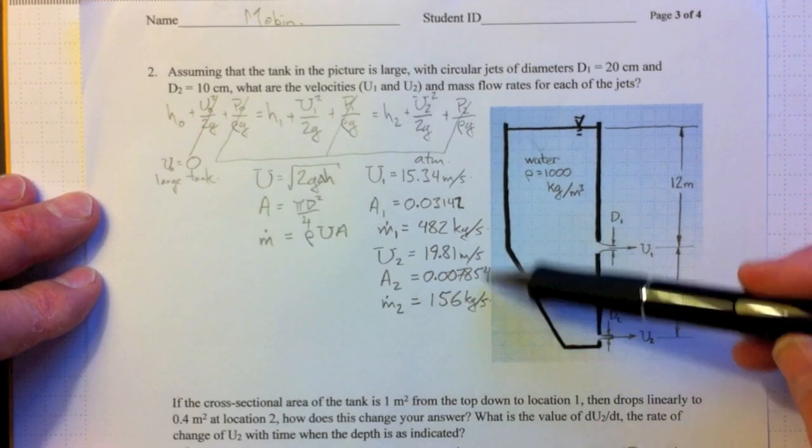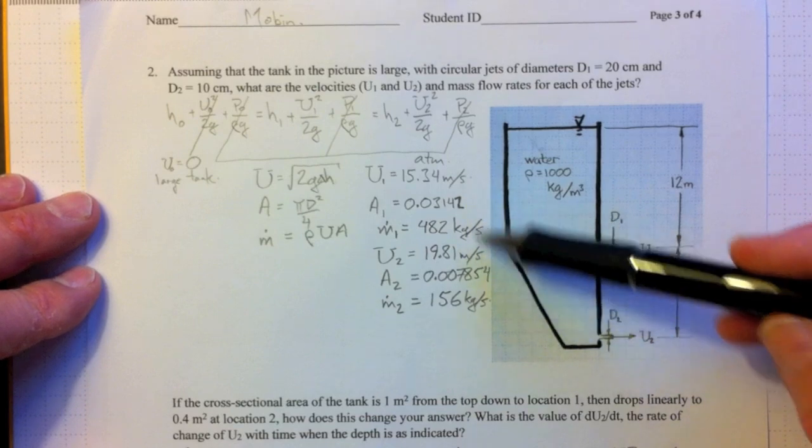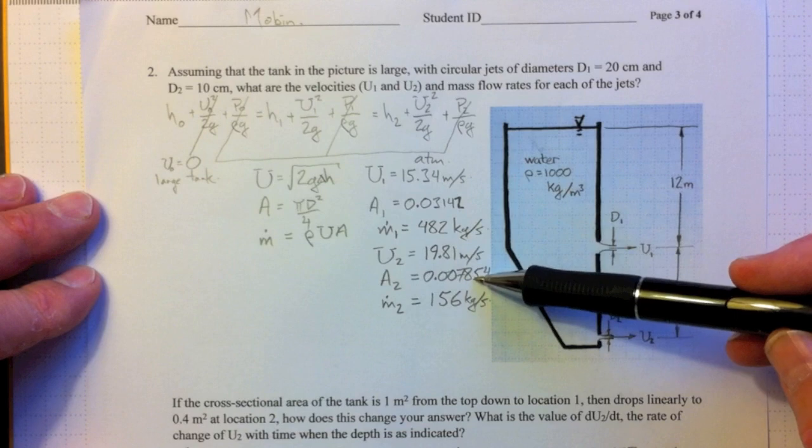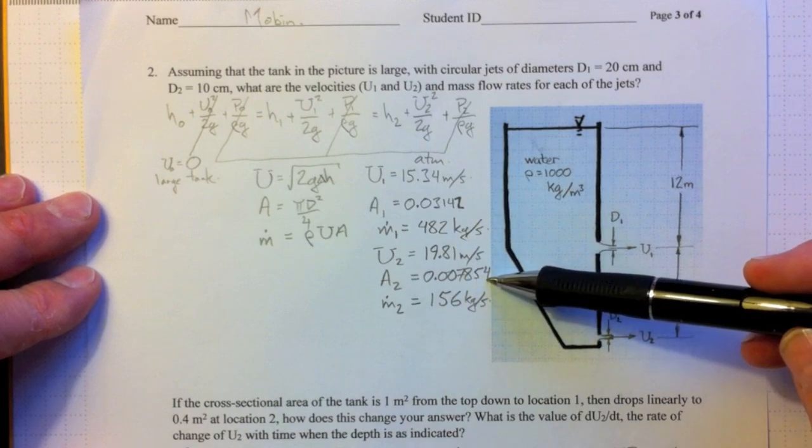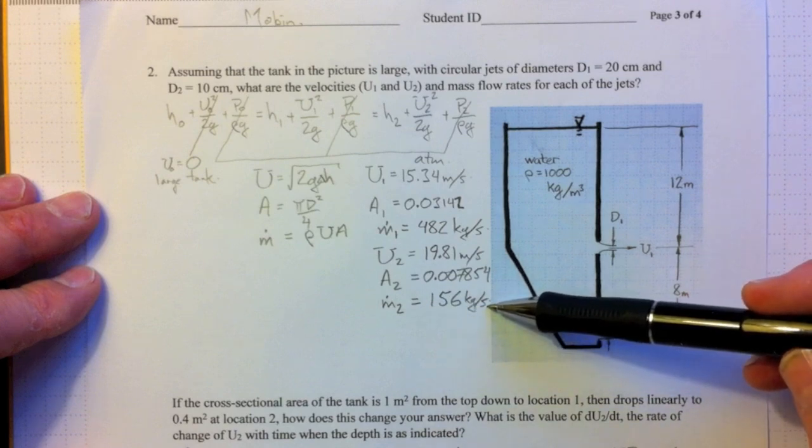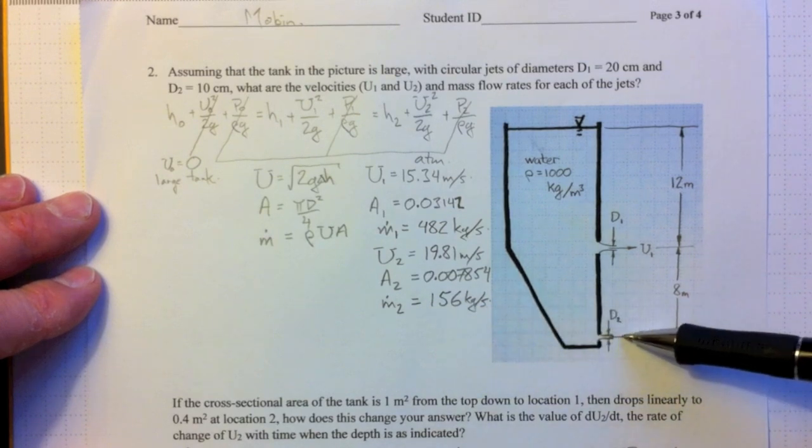The area, one quarter what it was at 1. There's a factor of 4 there because the diameters have a factor of 2, and area goes as diameter squared. And then multiplying through to get the mass flow, 156 kilograms per second coming out down here.